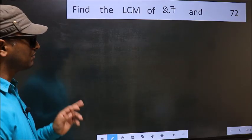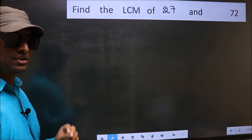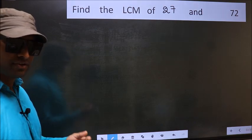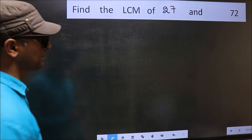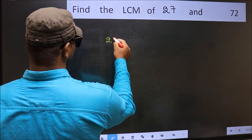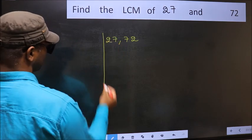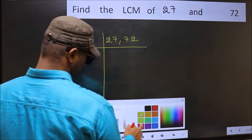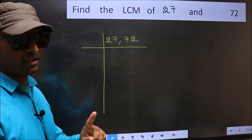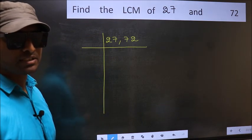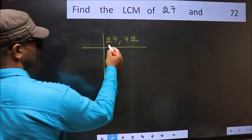Find the LCM of 27 and 72. To find the LCM, we should frame it in this way — writing 27 and 72. This is step 1. Now you should focus on the first number, which is 27 here.